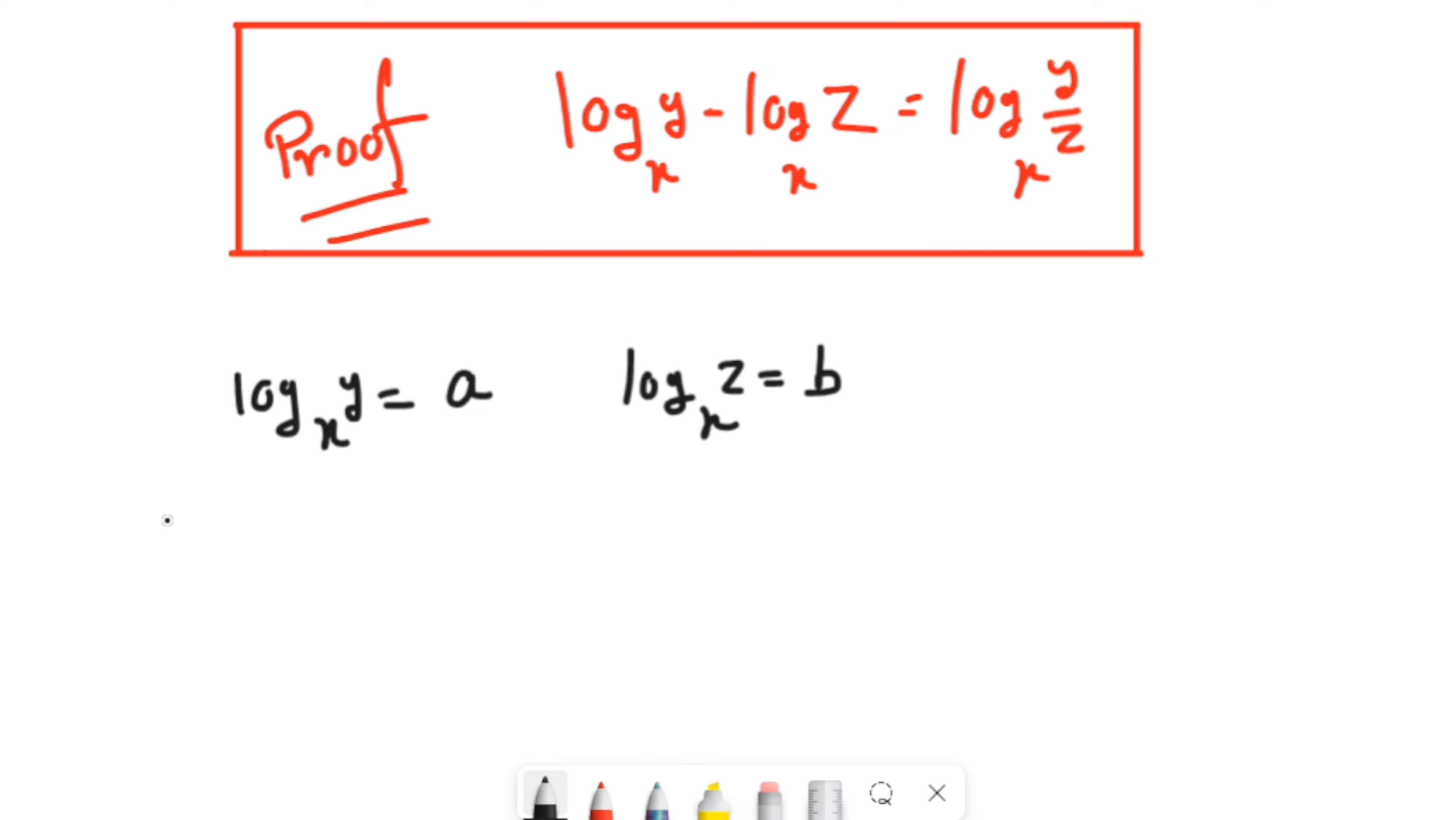Now we can write in the logarithmic way, we can write in the normal equation way that x to the power a equals y. Similarly, we can write this one as x to the power b equals z.